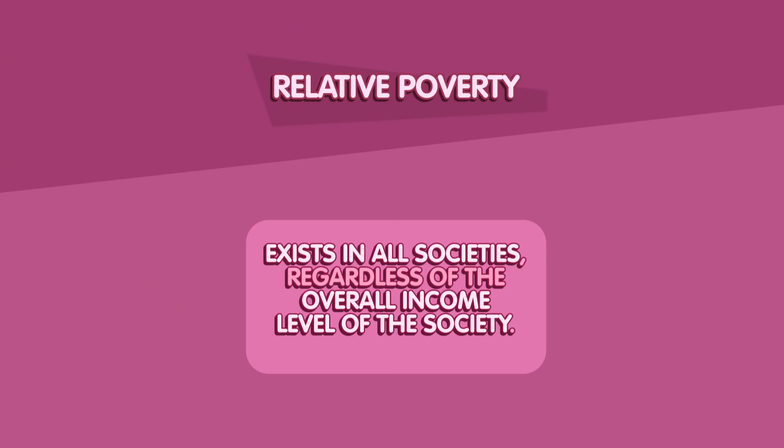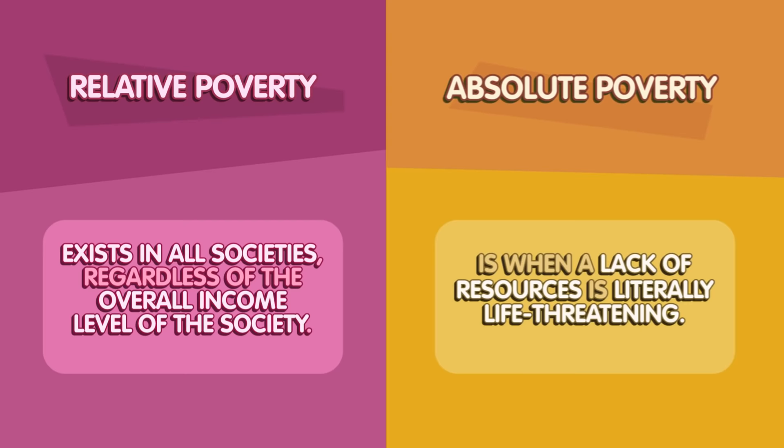This type of poverty is very different from what we see in high-income countries like the United States. That's why, when we talk about social stratification on a global level, it's important to remember the distinctions between relative and absolute poverty. Relative poverty exists in all societies regardless of the overall income level. But absolute poverty is when a lack of resources is literally life-threatening.